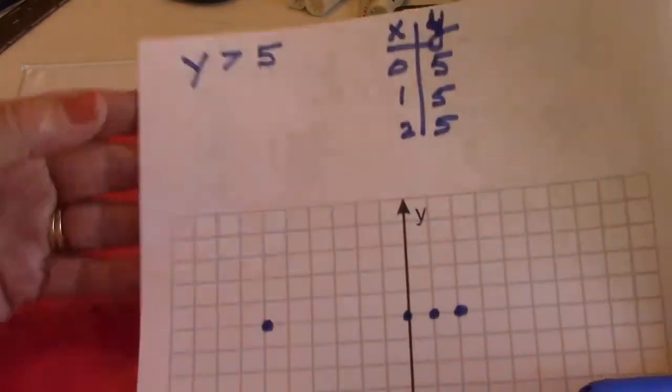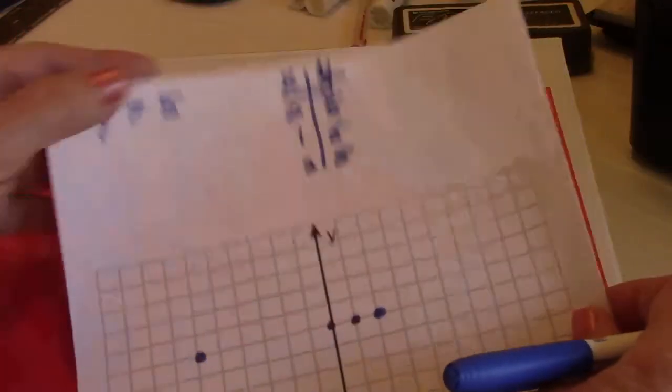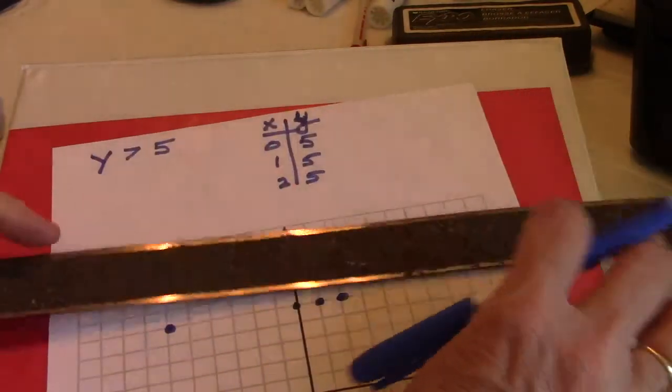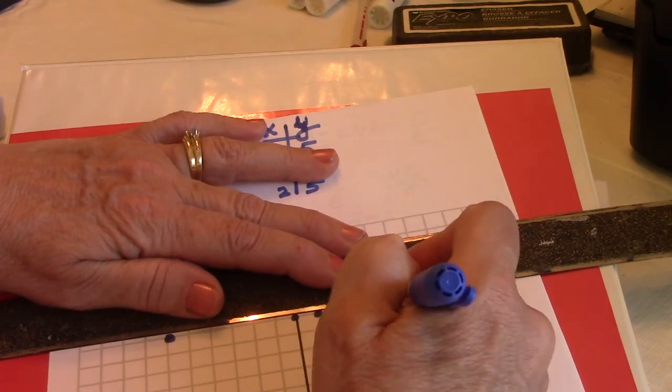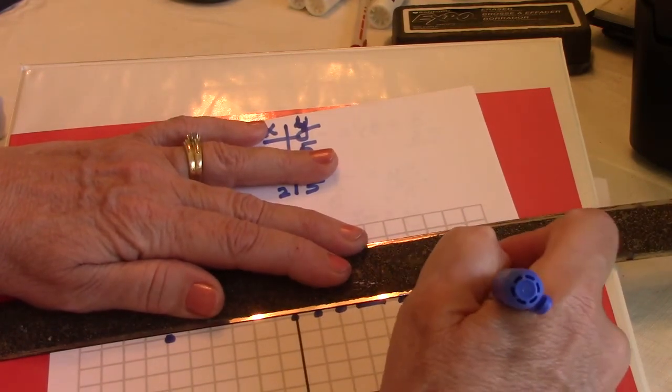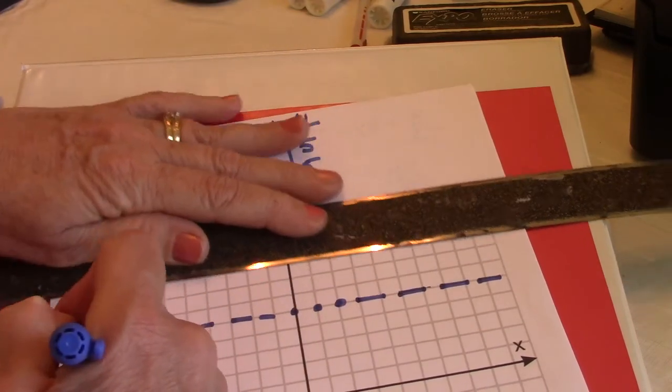Now it is y is greater than 5. So do I have a dotted line or do I have a dashed line? Obviously it's a dash because it's not equal to. So I have a dashed line the whole way across.